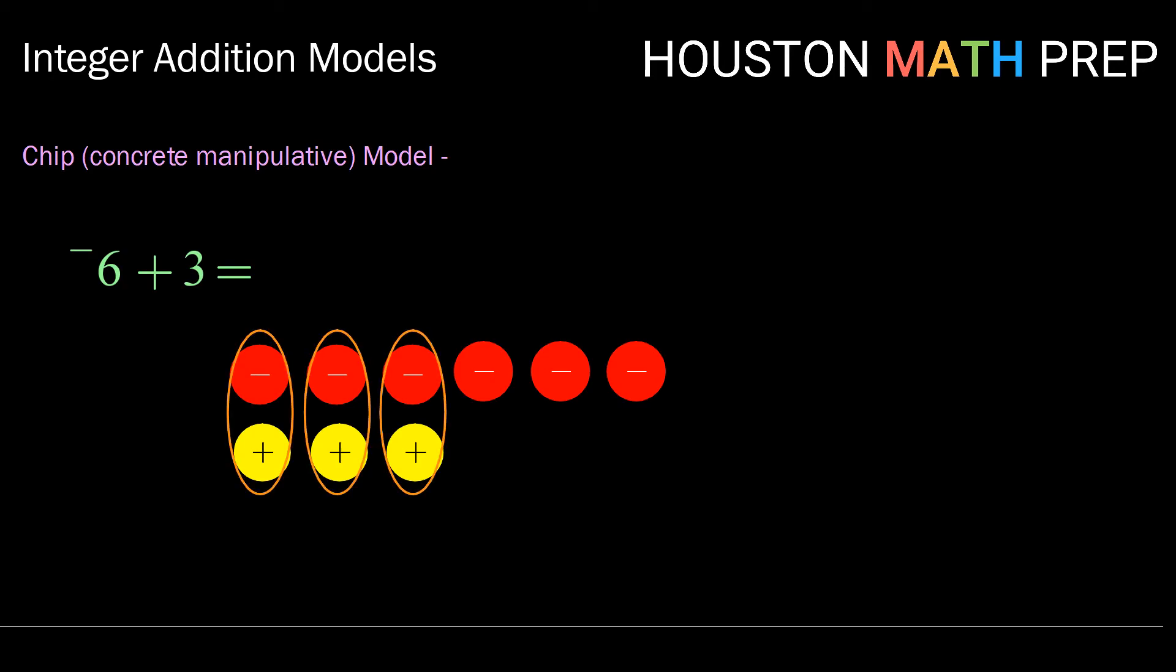Once again, we'll pair off one positive and one negative and those equal out to zero. So removing those, we have three red negative chips left. So our result is negative three.